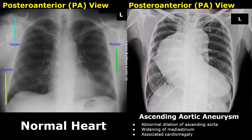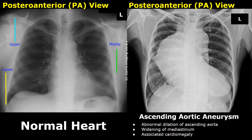Here is another image of aortic aneurysm — this is ascending aortic aneurysm. The left ventricle of the heart appears enlarged along with abnormal dilatation of the aorta. X-ray is not very good at determining the extent of the aortic aneurysm; further examination is required such as CT angiography.